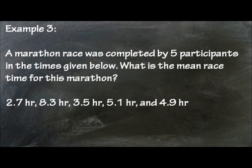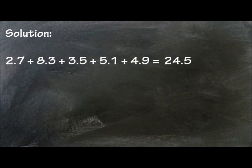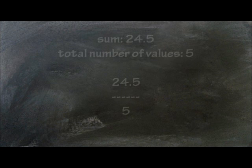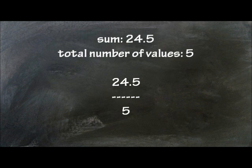Another example. A marathon race was completed by 5 participants in the times given below. What is the mean race time for this marathon? The sum of these times is 24.5 divided by the total number of values, we get 4.9 hours.